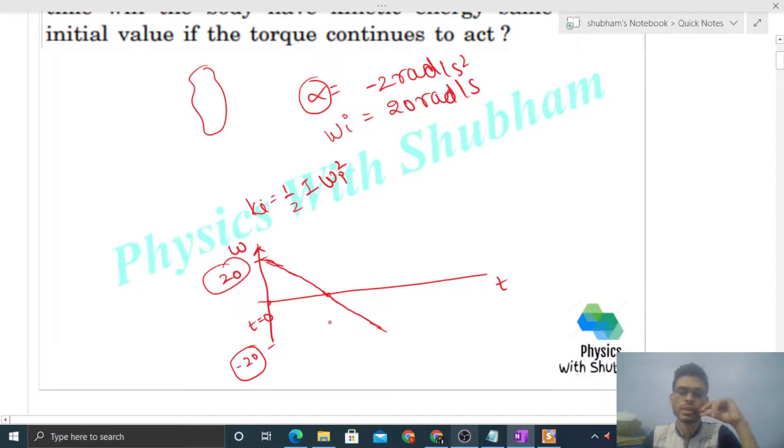So we have to find out the time at which the final angular velocity will be minus 20 radian per second. Can you find out? Of course, omega final equals omega initial plus alpha into t, right? Final omega is minus 20, that is equal to initial omega is 20 plus alpha is minus 2 and time.